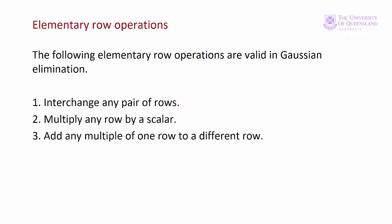Recall the elementary row operations used in Gaussian elimination: we can interchange any pair of rows, multiply any row by a scalar, and add any multiple of one row to a different row.